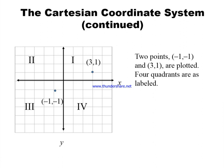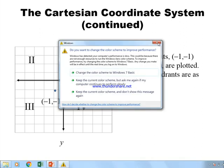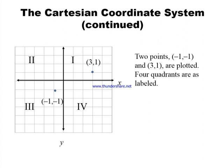The points shown in the slide are minus one, minus one and three, one. The point minus one, minus one lies in the third quadrant and the point three, one lies in the first quadrant. To plot three, one, we start from the origin, move three units in the positive direction along the x-axis, then one unit along the y-axis. The point three, one is shown with the blue dot in the first quadrant.